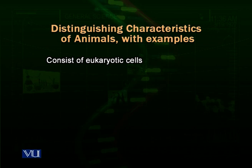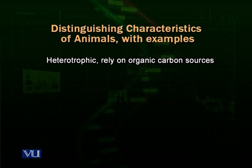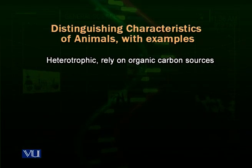Animals consist of eukaryotic cells. They are heterotrophic — they rely on the organic carbon source, the carbon which is provided by the producers in the ecosystem or maybe by other consumers which are the herbivores or the primary consumers. So animals are present at every trophic level of the consumers.